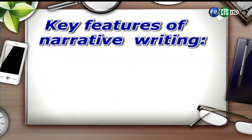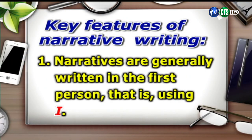So now here are the key features of narrative writing. Narratives are generally written in the first person, that is using I. 敘述文寫作通常透過第一人稱，也就是「我」這個身份來敘述事情。However, you can also write narratives in the third person — using he, she, or it — particularly if you're writing about a celebrity, for example.